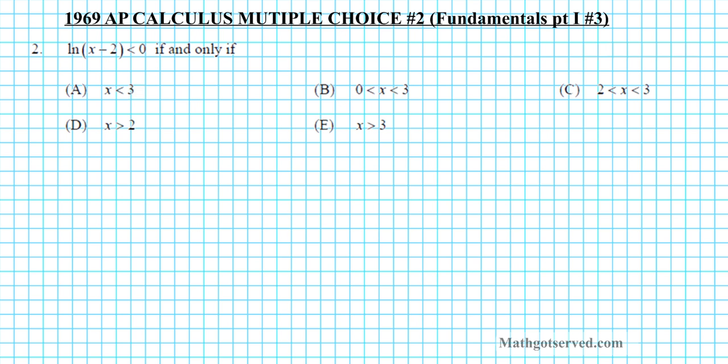Let's take a look at the question. For number 2 we're solving this equation: the natural logarithm of x minus 2 is less than 0 if and only if. So this problem is assessing our ability to do two things. Firstly, to solve logarithmic equations, and secondly, to pay close attention to the domain constraints on your logarithmic arguments.